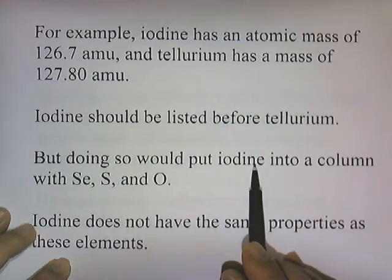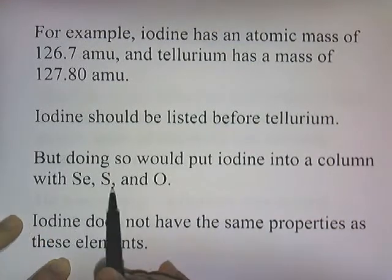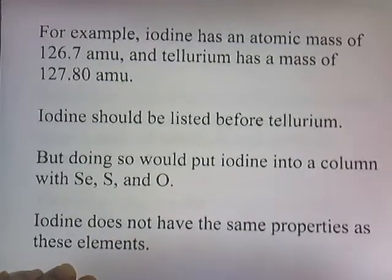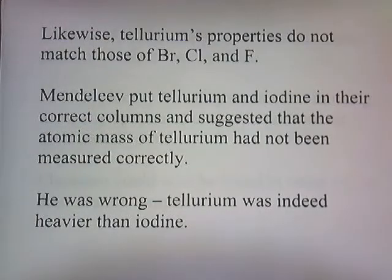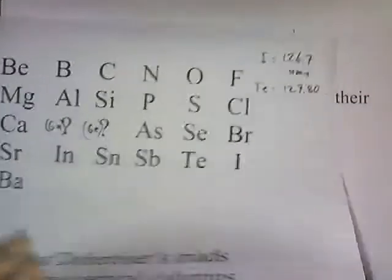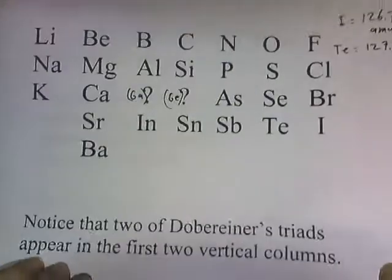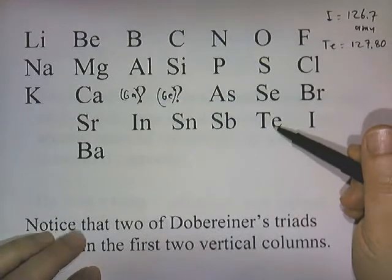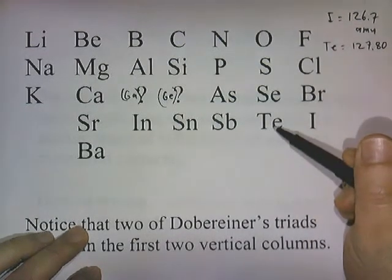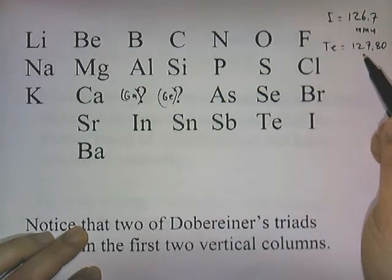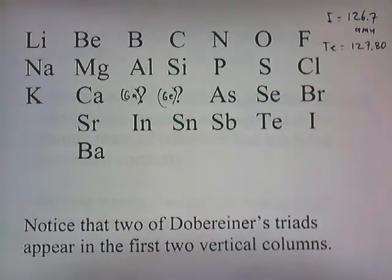To be clear: putting iodine before tellurium would place iodine with sulfur and selenium, which don't share the same properties as iodine. And placing tellurium after iodine wouldn't match the properties of bromine, chlorine, and fluorine. Mendeleev kept tellurium and iodine in their correct columns and suggested that tellurium's atomic mass had not been measured correctly — essentially blaming the experimenters. In fact, he was wrong: tellurium is indeed heavier than iodine.